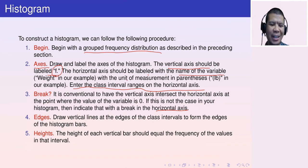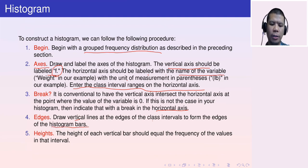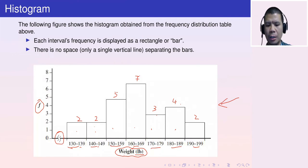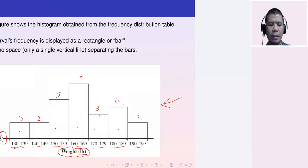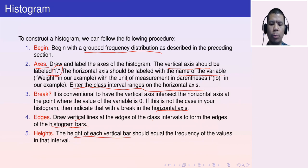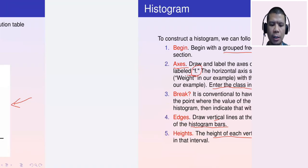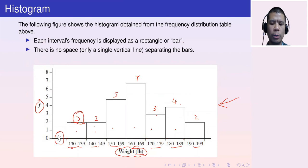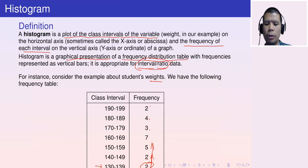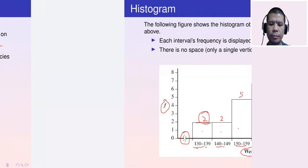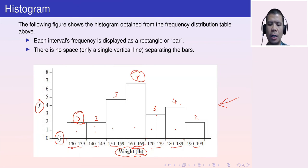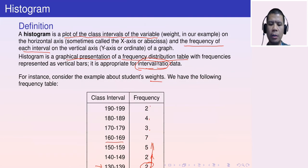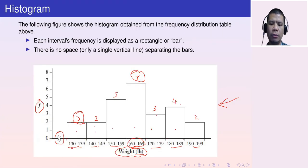Step four: draw vertical lines at the edges of the histogram bars along the horizontal axis. Step five: determine the heights — the height of each bar should equal the frequency of the values in that interval. For example, the interval 160–169 has frequency 7, so its bar height is 7.